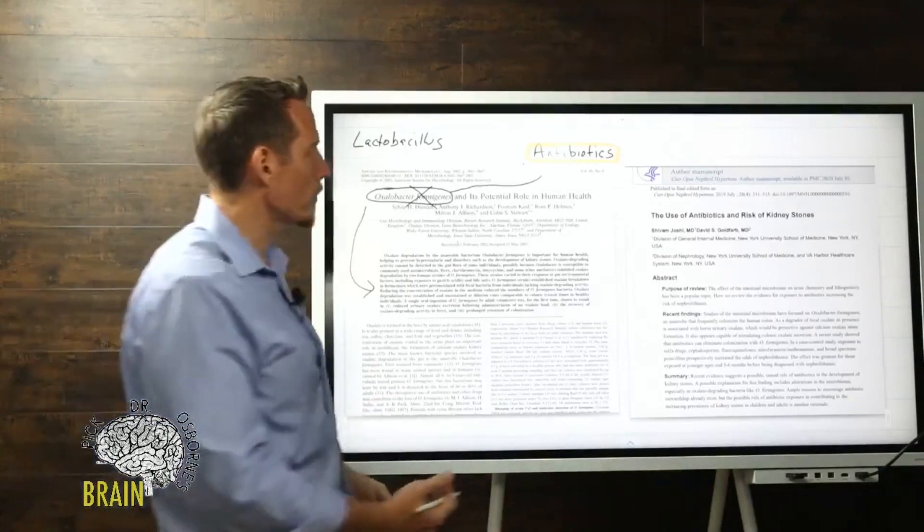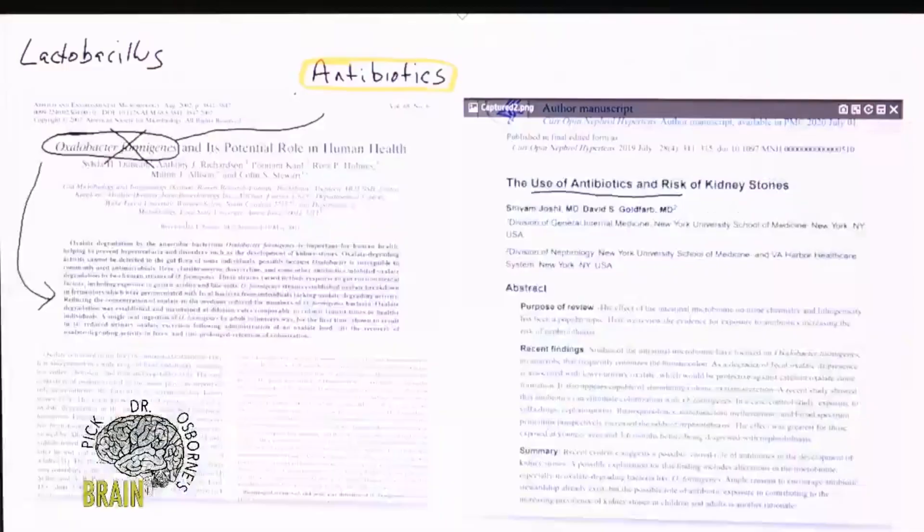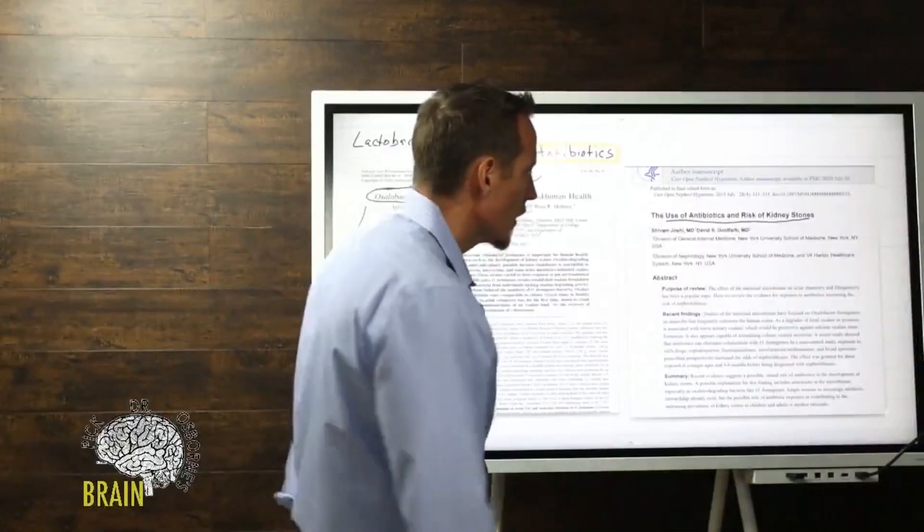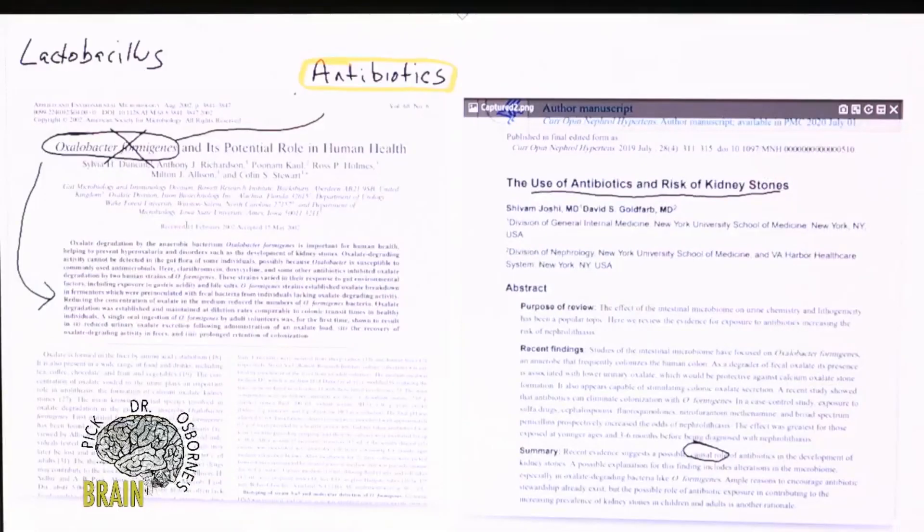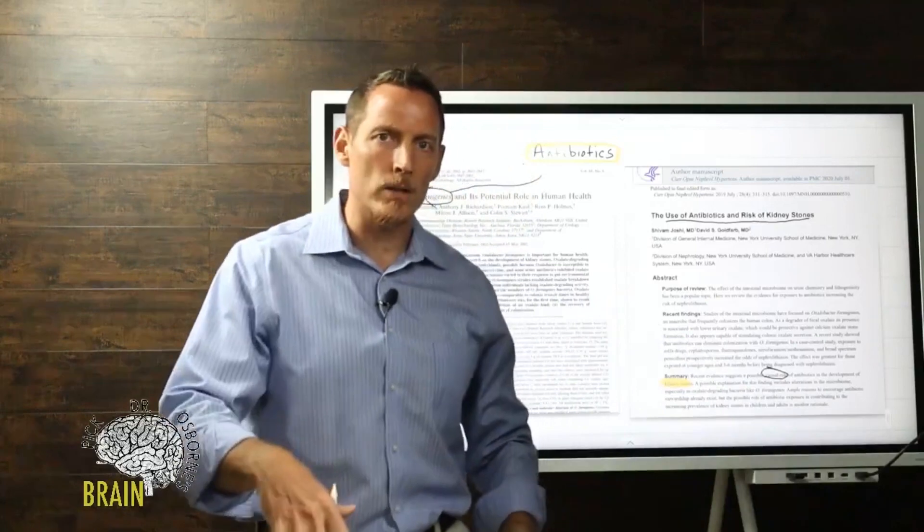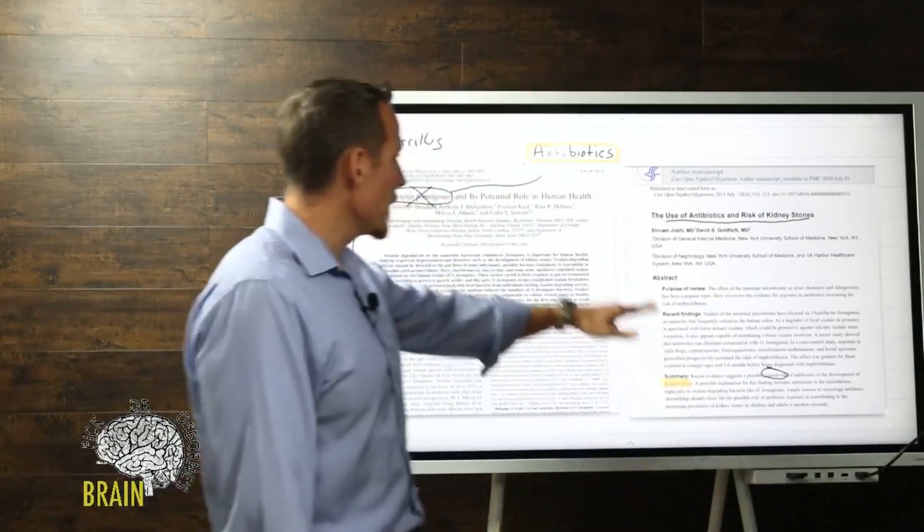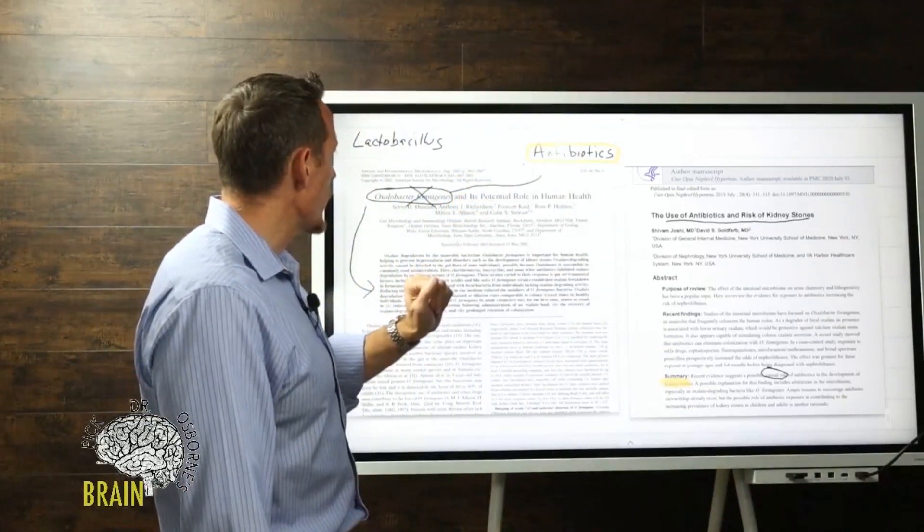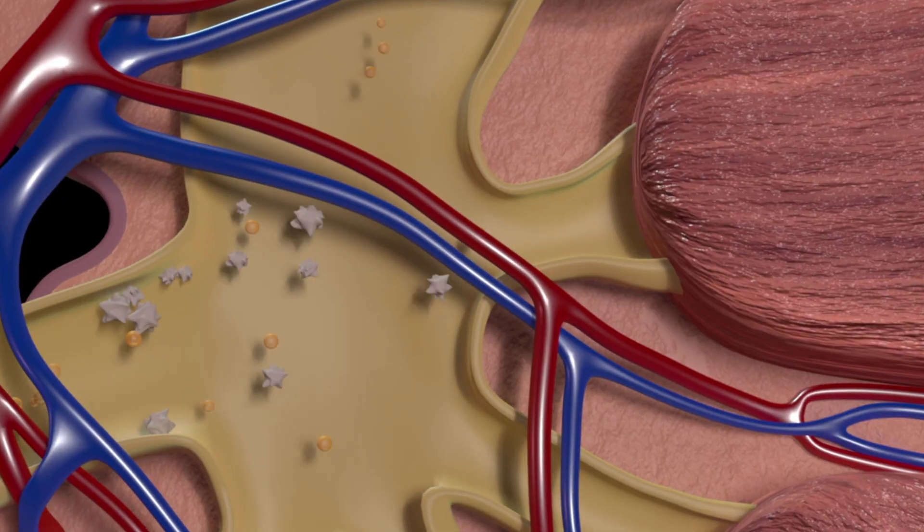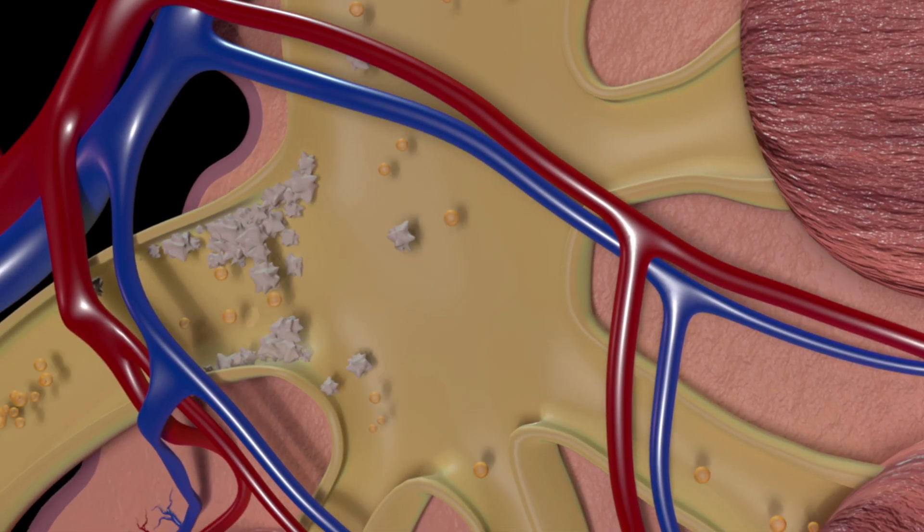In this research study, you can see here the use of antibiotics and the risk of kidney stones. In summary, you can see here recent evidence suggests a possible causal role - very important causal role - of antibiotics in the development of kidney stones. This is basically saying if you are one of those individuals that has taken antibiotics multiple times throughout your life, we now have research showing a causal role, meaning antibiotics can actually cause an increased risk for the development of kidney stones. Antibiotics are another thing that can in a very big way increase the risk of oxalate toxicity. Remember, one form of oxalate toxicity is a kidney stone. Those of you who've ever had a kidney stone know the level of pain that can really cause.